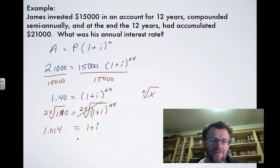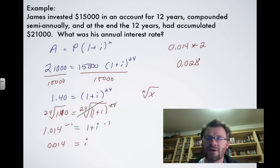So now to solve for I, we would just subtract 1 from both sides. So we get 0.014 being I. Now, that's the interest rate. That's something that has already been divided by 2. So if we want to find the annual interest rate, we would take the 0.014 and we'd multiply it by 2. And we get 0.028, which means that James invested his money at 2.8%.